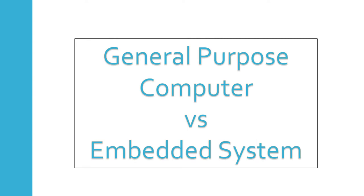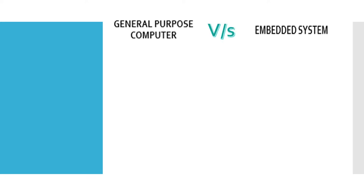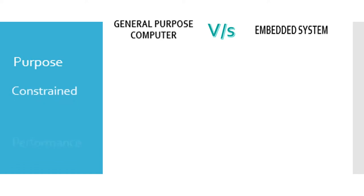Let's try to understand some of the basic differences between general purpose computer and an embedded system. We will be discussing these differences based on four parameters: their purpose, different constraints, their performances, and the available user interface.